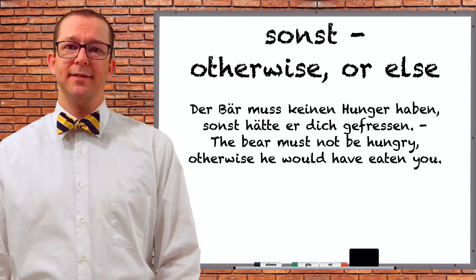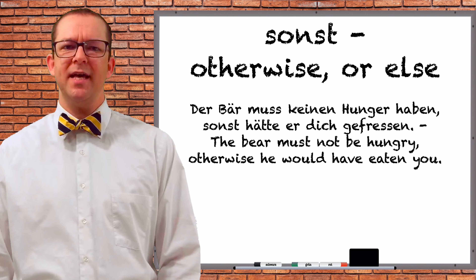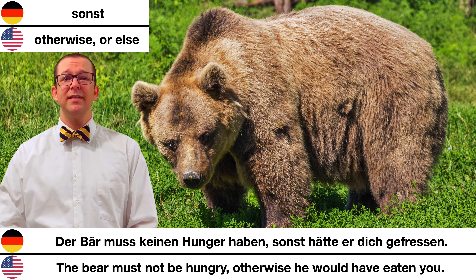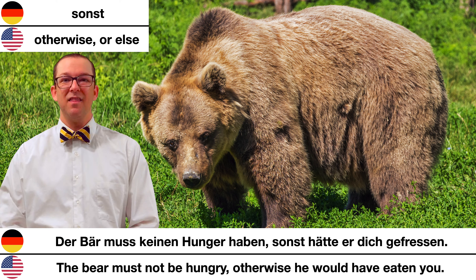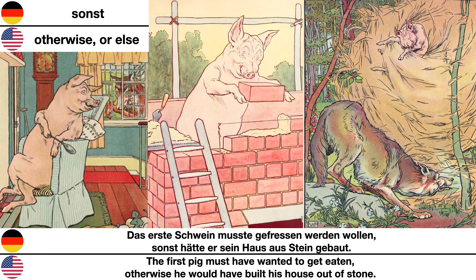If you would like to say otherwise in German, sonst is a good option. For example: Der Bär muss keinen Hunger haben, sonst hätte er dich gefressen — The bear must not be hungry; otherwise he would have eaten you. Das erste Schwein musste gefressen werden wollen, sonst hätte er sein Haus aus Stein gebaut — The first pig must have wanted to get eaten; otherwise he would have built his house out of stone.